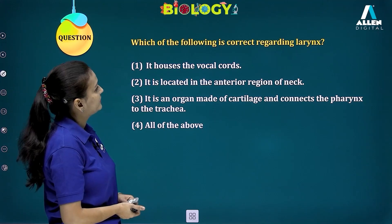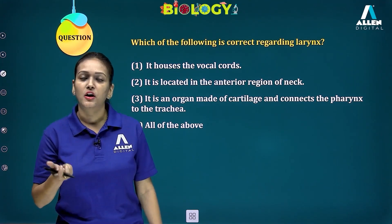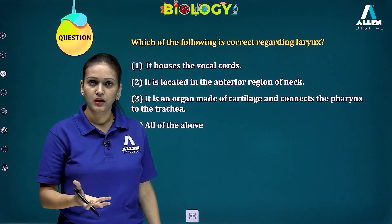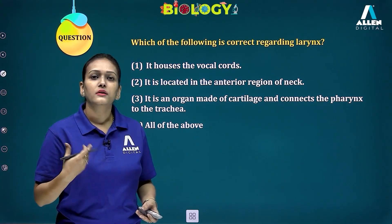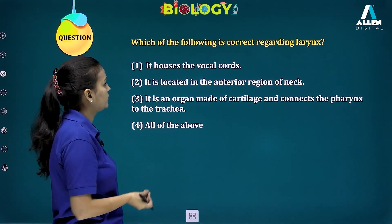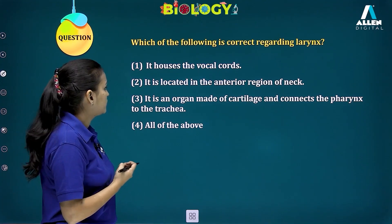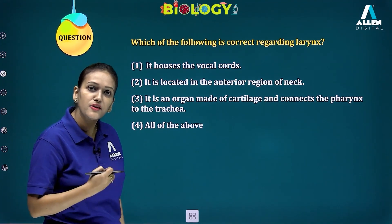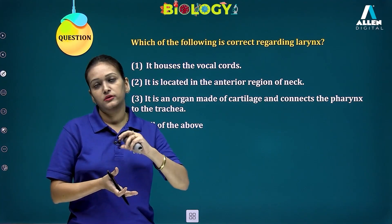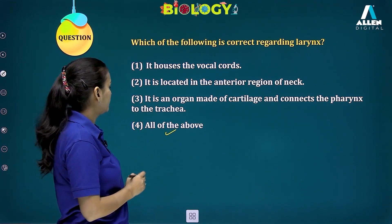Next question: which statements are correct regarding the larynx? The larynx is the sound box — it houses vocal cords which vibrate to produce sound when you exhale and your tongue assists. The larynx is located in the interior region of the neck, it is an organ made of cartilage, and it connects the pharynx to the trachea. After the pharynx comes the larynx at the upper region of the trachea. All of the above statements are correct, so the fourth option is the answer.